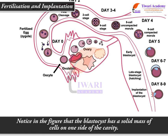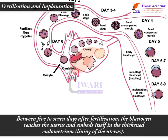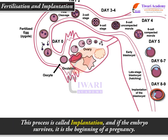Notice in the figure that the blastocyst has a solid mass of cells on one side of the cavity. Between 5 to 7 days after fertilization, the blastocyst reaches the uterus and embeds itself in the thickened endometrium lining of the uterus. This process is called implantation and if the embryo survives, it is the beginning of a pregnancy.